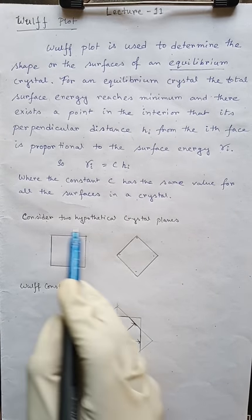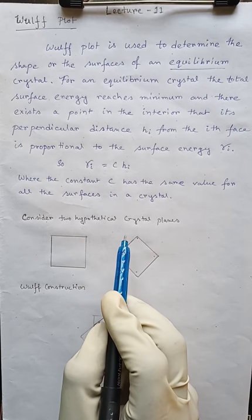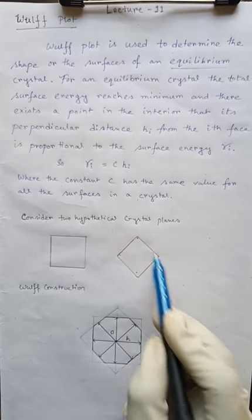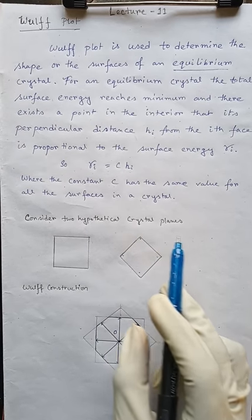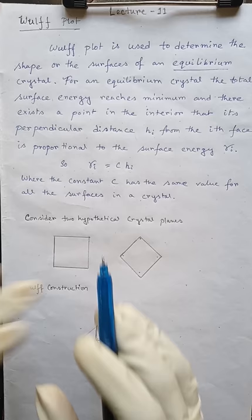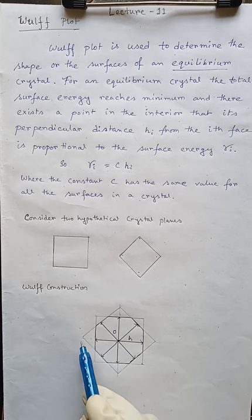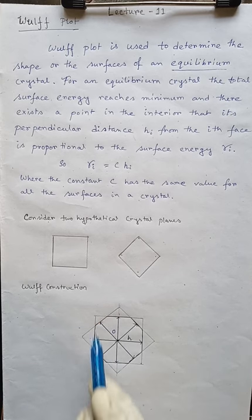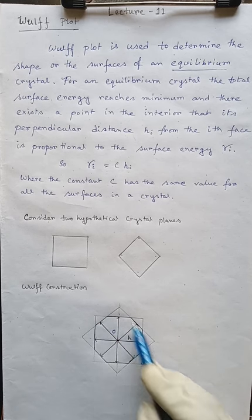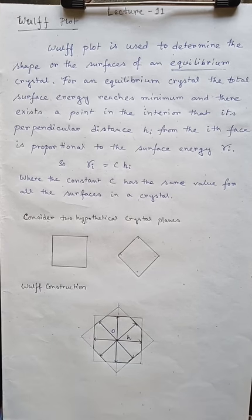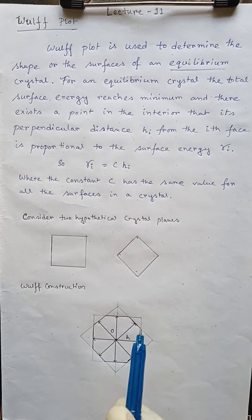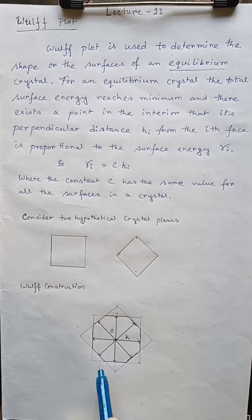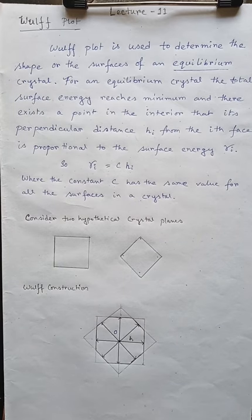Now consider two hypothetical crystal planes. This one is a crystal plane, this is another one. So if we just merge them, we will get this shape. First one, this, another one, this. So this is the actual shape, but in equilibrium we get this shape which we are getting from the Wulff plot.